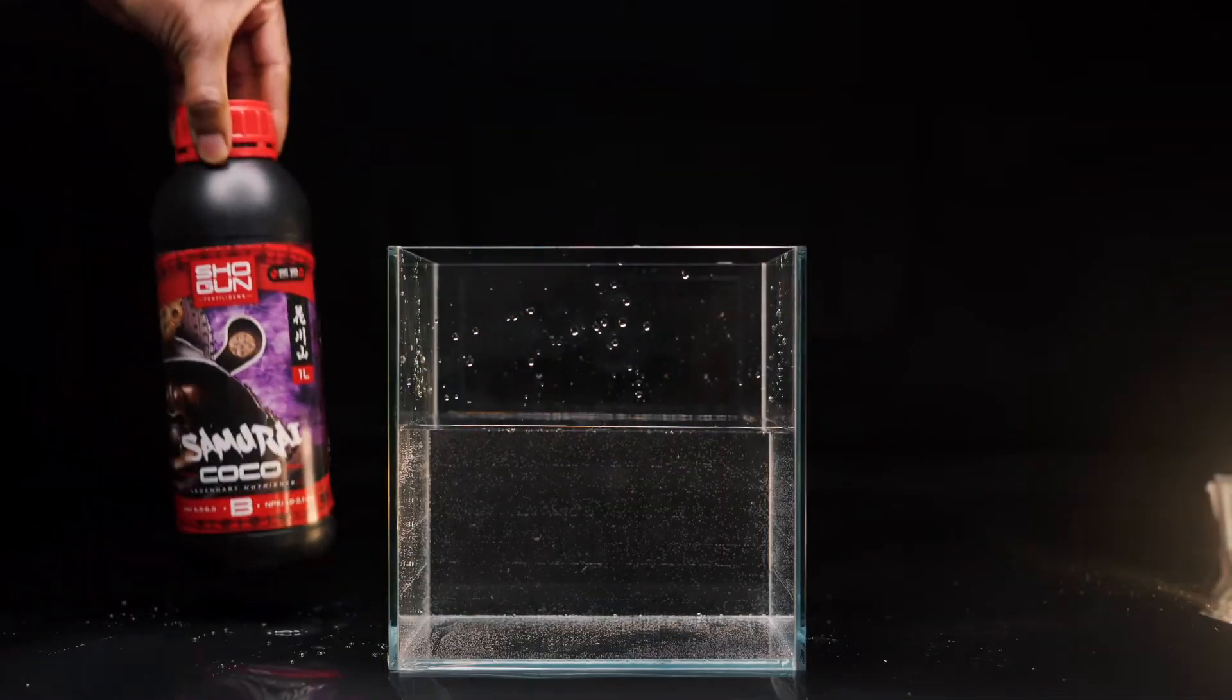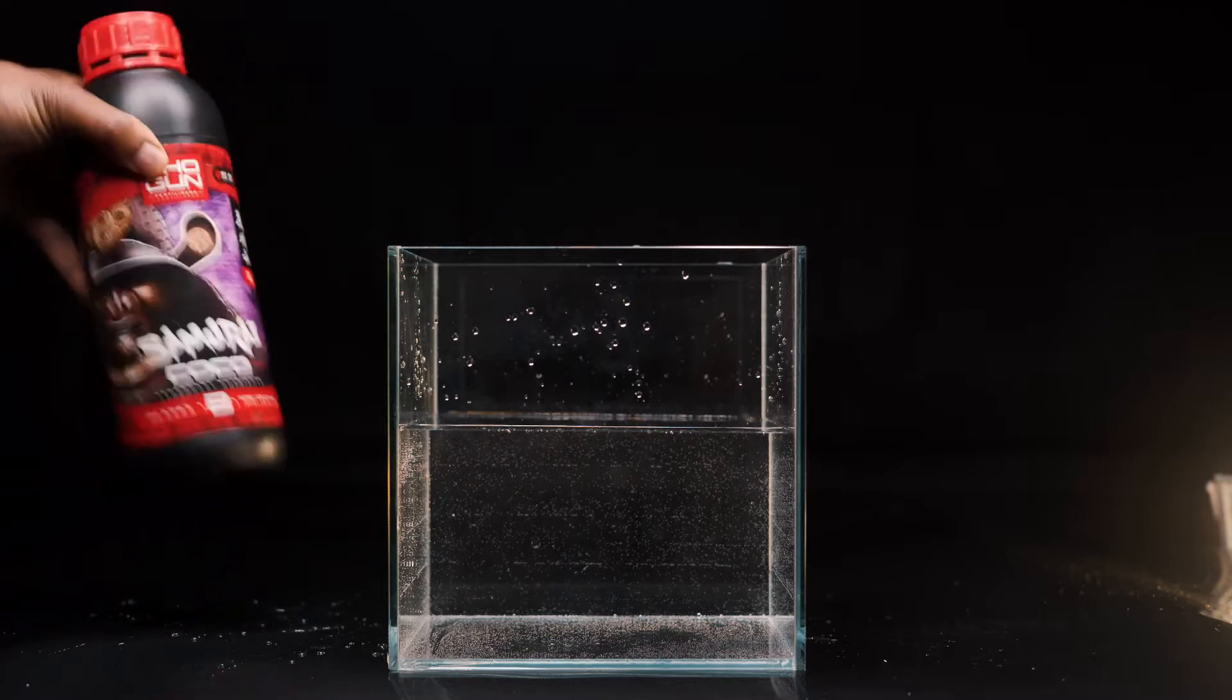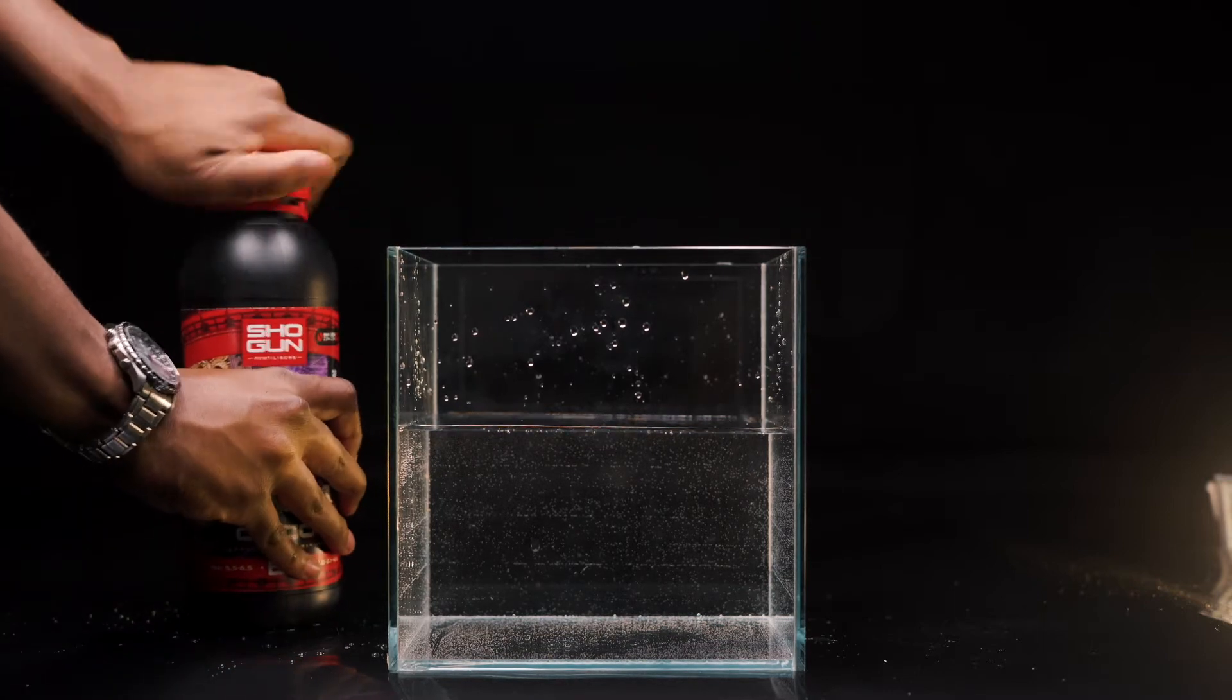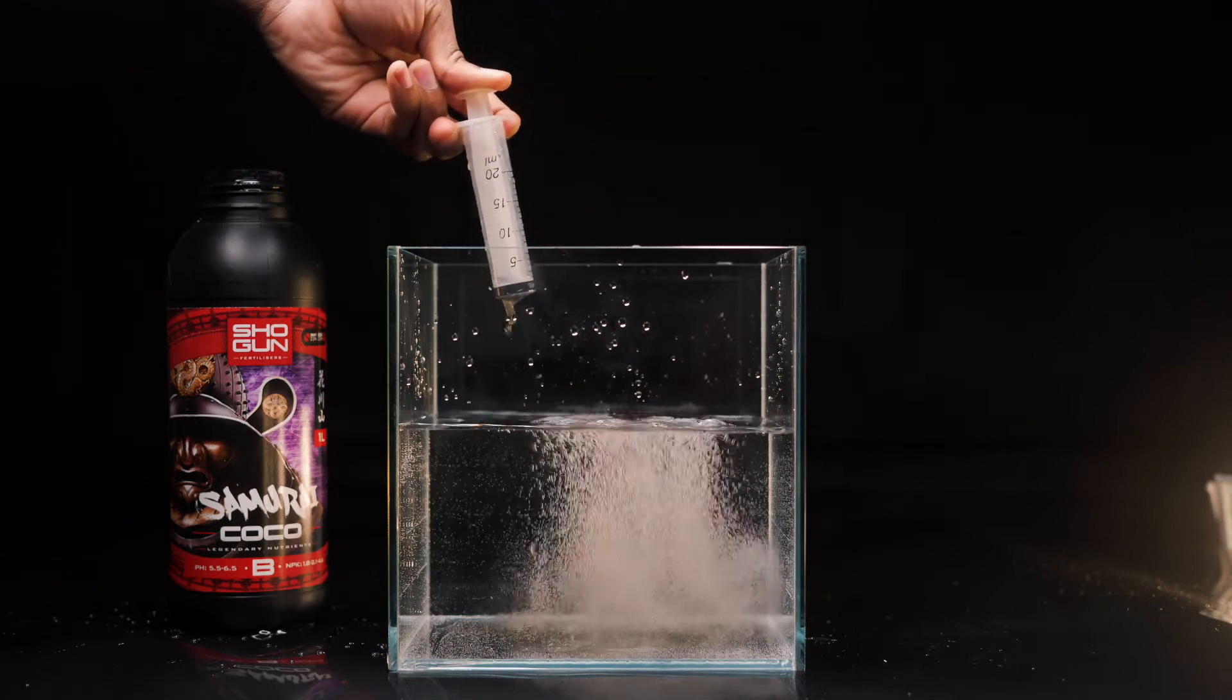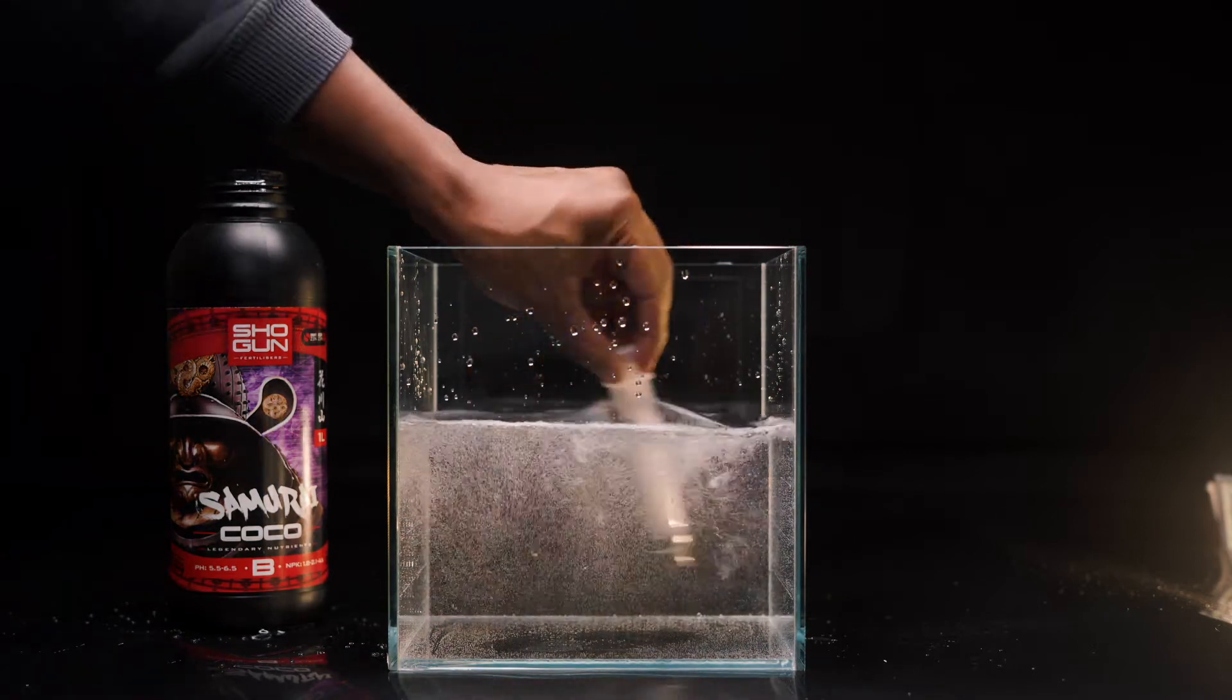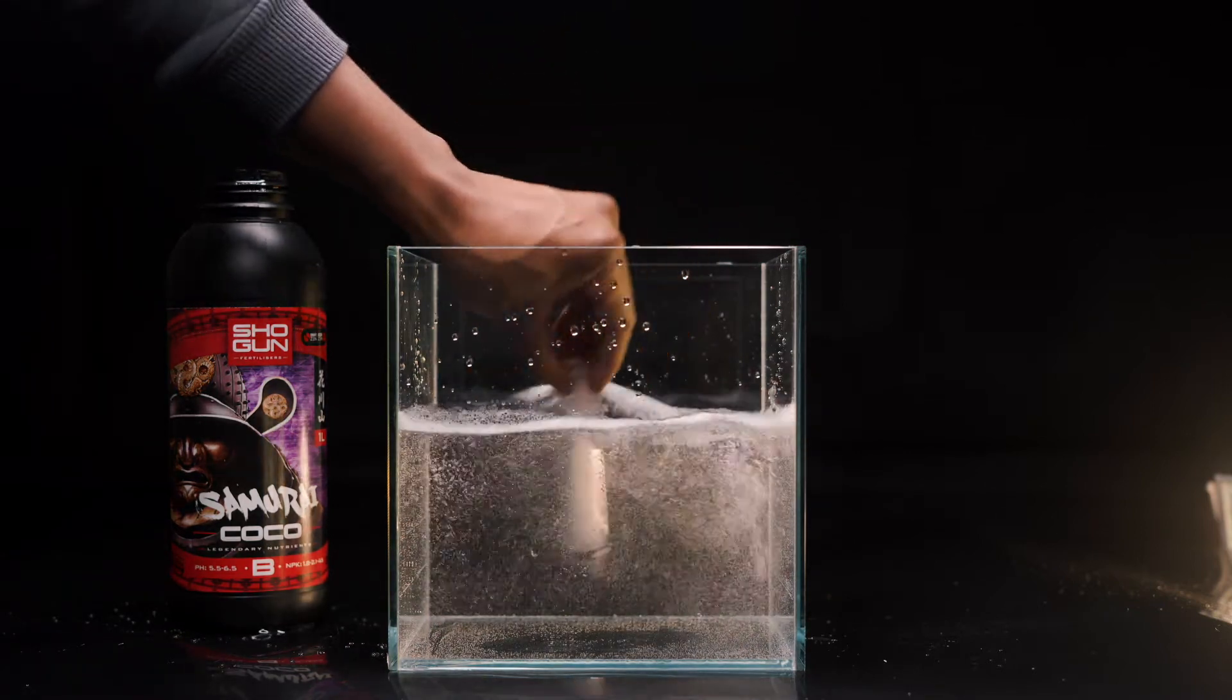Step 3: Next, you want to take your Samurai Cocoa B, shake very well and add at the recommended rate. Make sure to rinse out any of your measuring equipment before using that. This should be the exact same measure as the rate on the Samurai Cocoa A.